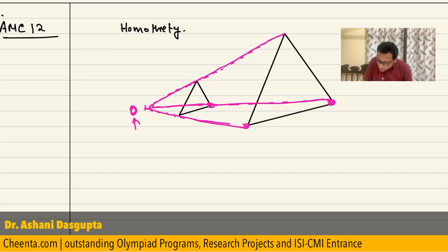It might be possible to find a point like this, not always though. In a bigger class, in a more wider class, we will be discussing when this is possible. But this is one way to think about similarity. This point O is a very special point. It's sometimes called the center of homothety.